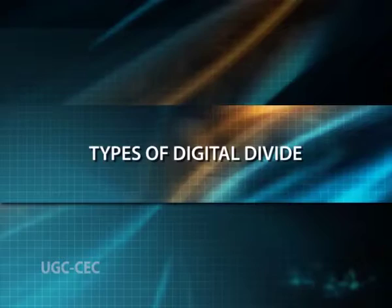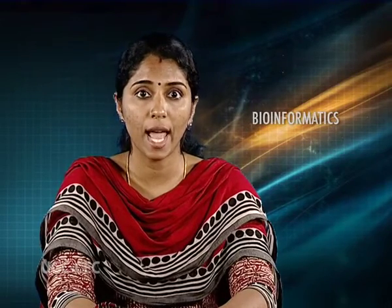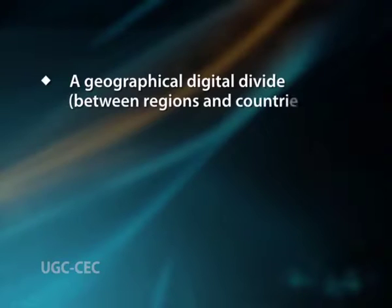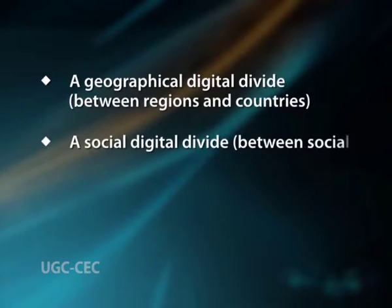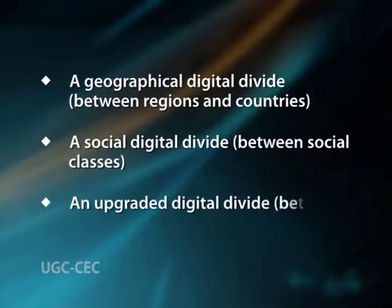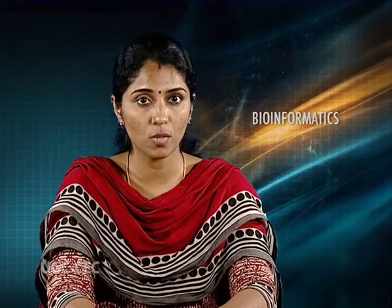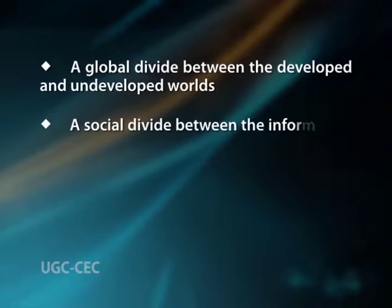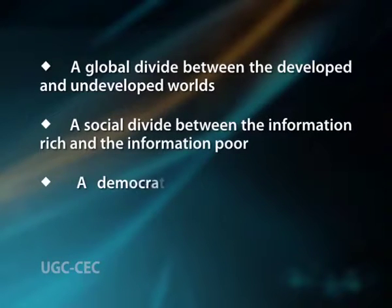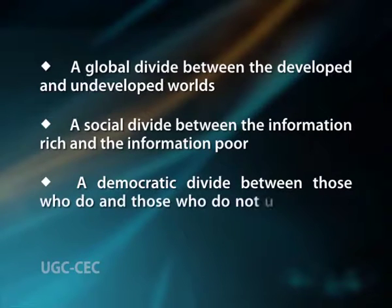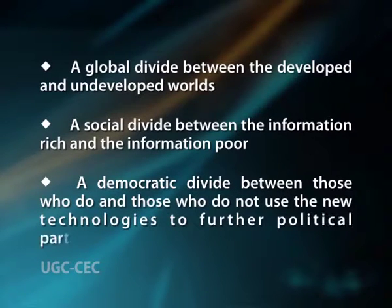Types of digital divide. Three distinctive divides described by Hanuman and Rudin in 2007: a geographical digital divide between regions and countries, a social digital divide between social classes, and an upgraded digital divide between technology and humans. The three major divides explained by Norris in 2001, Mark in 2003 and Branko in 2005 are: a global divide between the developed and undeveloped worlds, a social divide between the information rich and the information poor, and a democratic divide between those who do and those who do not use new technologies to further political participation.